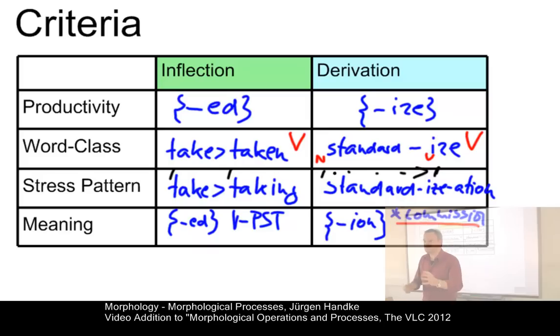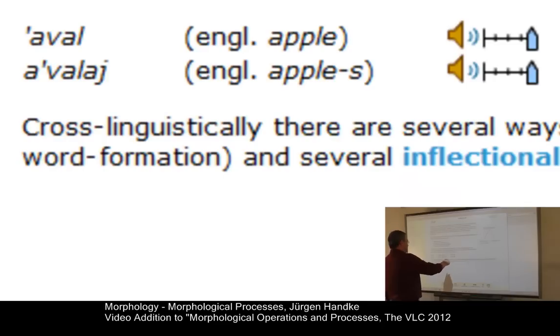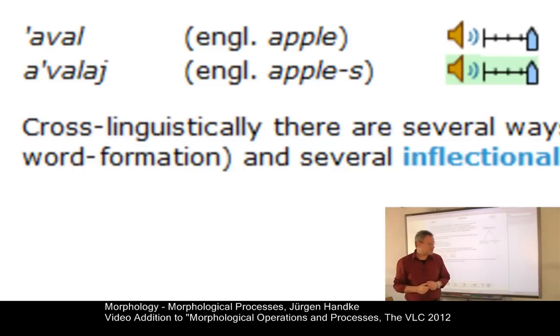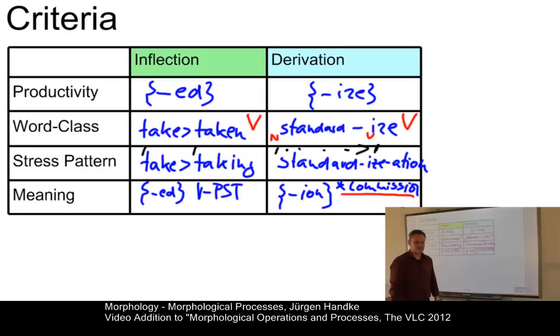In some languages, the criterion stability of stress pattern, for example, does not work. Here is an example from Welsh, a Celtic language. In Welsh, aval means apple and the plural is aval. So, you see, even in inflectional processes, in some languages, the stress may change.